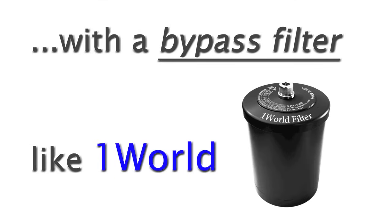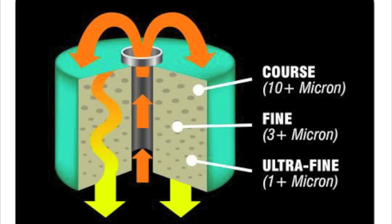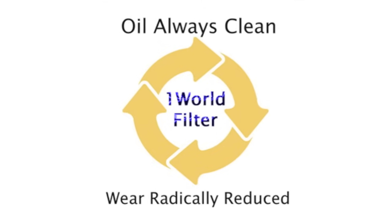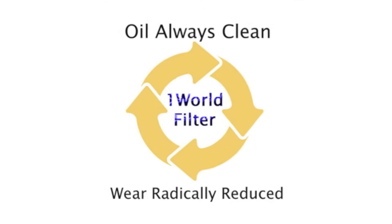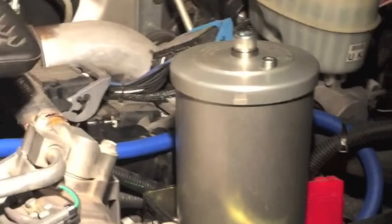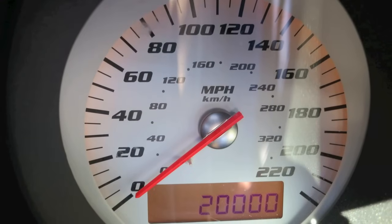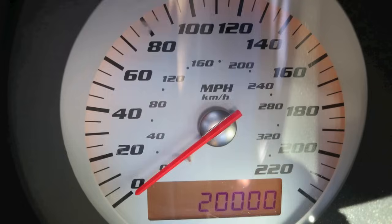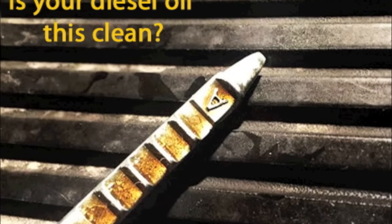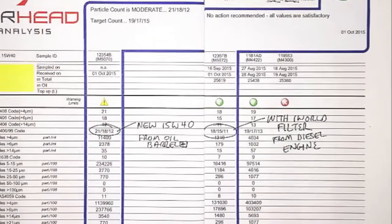One World Filter is the best. It filters down to 1 micron, more than 10 times more effective than your stock filter. That means you will actually be driving around with constantly clean oil, and that can radically increase the life of your engine. One World Filter also has a capacity 400 times greater than your stock filter. That means you can go up to a year or 20,000 miles with clean oil before a change is needed. This is a real game changer. One World Filter has been shown to keep your oil technically cleaner than new oil.